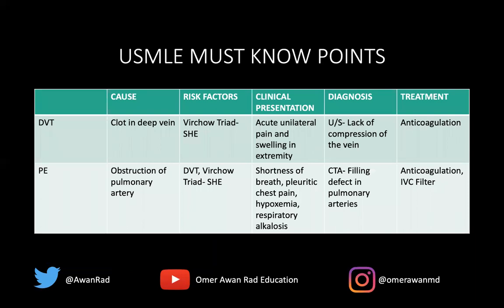For the USMLE: DVT is a clot in a deep vein — typically femoral, popliteal, or iliac. Remember Virchow's triad using the SHE mnemonic: venostasis, hypercoagulability, or endothelial damage. It presents clinically as acute unilateral pain and swelling in an extremity. Diagnose with ultrasound showing non-compressibility of the vein; treat with anticoagulation. PE is obstruction of the pulmonary artery. Risk factors include DVT and Virchow's triad. It presents with shortness of breath, pleuritic chest pain, hypoxemia, and respiratory alkalosis. Diagnostic study of choice is CTA looking for filling defects in the pulmonary arteries. Treatment is anticoagulation and/or an IVC filter.